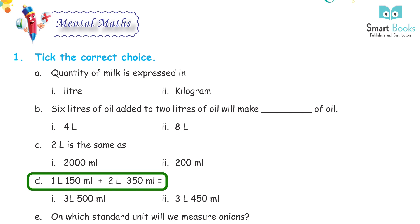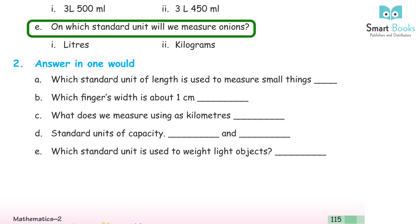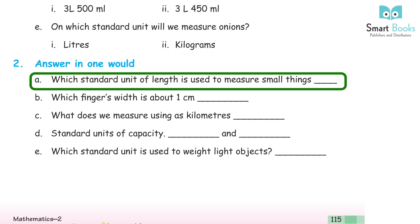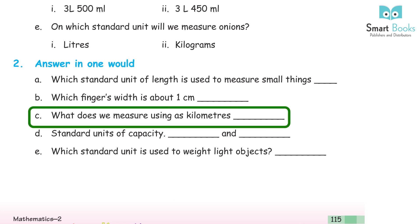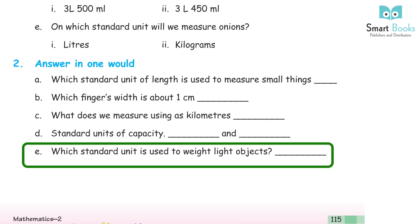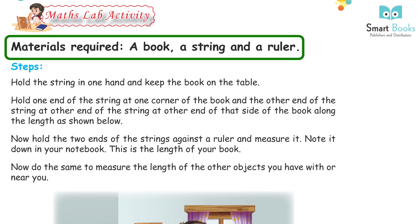2 liters is the same as 2000 milliliters or 200 milliliters? Answer: 2000 milliliters. 1 L 150 ml + 2 L 350 ml = 3 L 500 ml. On which standard unit will we measure onions — liters or kilograms? Answer: kilograms. Answer in one word: Which standard unit of length is used to measure small things? Millimeter. Which finger's width is about 1 centimeter? Index finger.